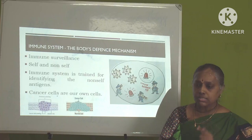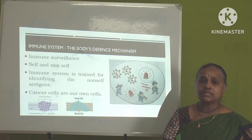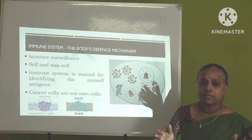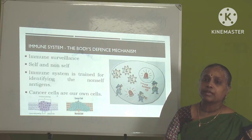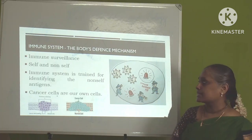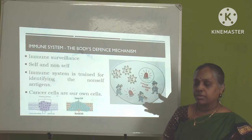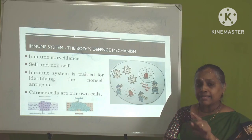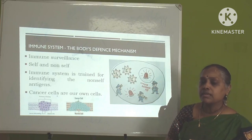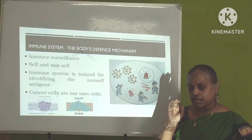Surveillance means a constant watching on any suspicious activity around us. Immune surveillance means the watching of the immune system through its various cells. It watches continuously whether any normal cell is transforming into a cancer cell. Our immune system recognizes any foreign material like bacteria or virus through the antigens or proteins on their surface, discriminating self from non-self and attacking non-self material.